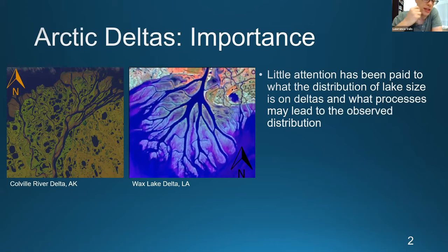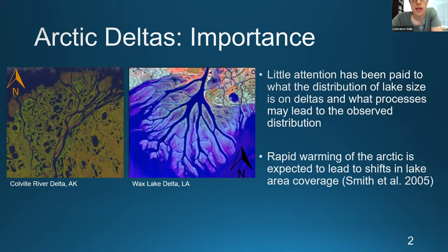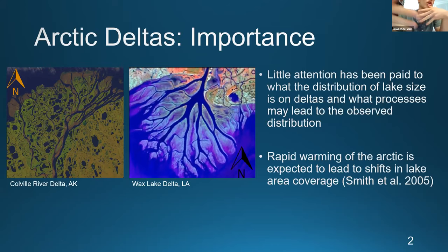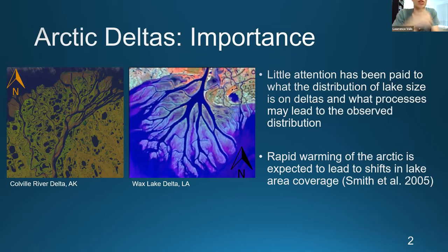Understanding the distribution is important if you have lake size parameterized, especially as a nonlinear function in a land surface model for energy budget or methane budget. Also, rapid warming of the Arctic is leading to changes, but it's not exactly clear what those changes are, the magnitude of the changes, or the timescale of the changes.